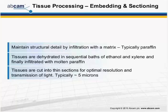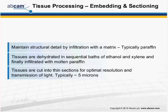After fixation, tissues need to be further processed by embedding and sectioning. To maintain structural detail, tissues are infiltrated with a matrix, typically paraffin wax. The tissues are dehydrated in sequential baths of ethanol and xylene, and then infiltrated with molten paraffin wax. Once the wax has hardened, the tissues are cut into thin sections — typically about 5 microns thick — for optimal resolution and transmission of light.